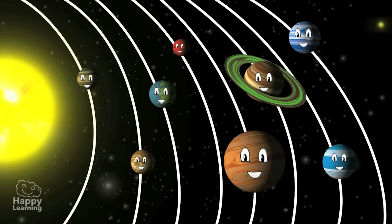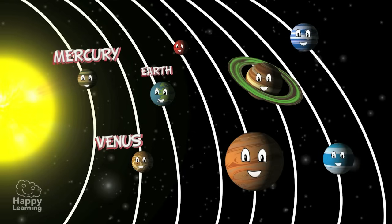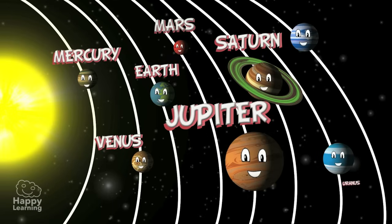The most interesting things that we should know about the solar system are the planets. Let's look at them, starting with the ones closest to the Sun and then getting further away.